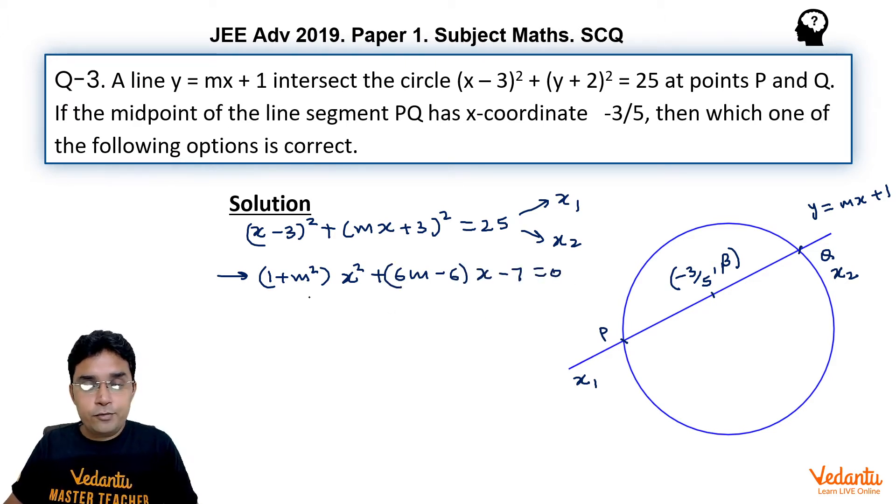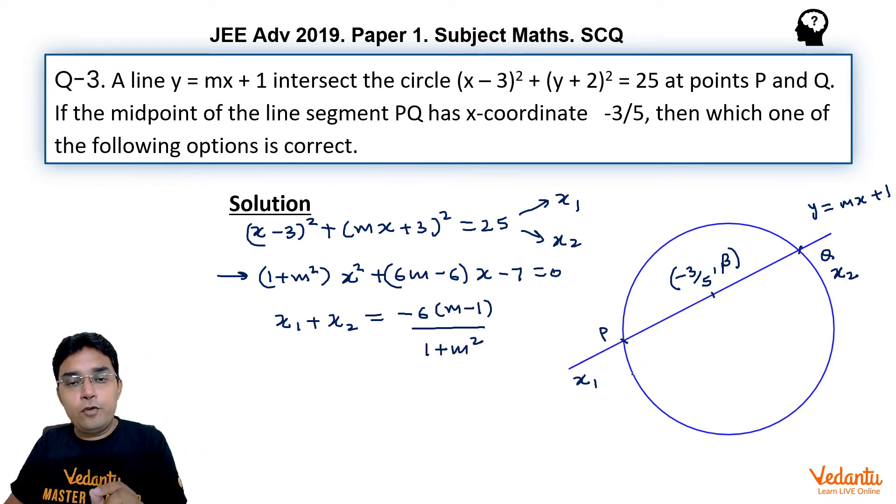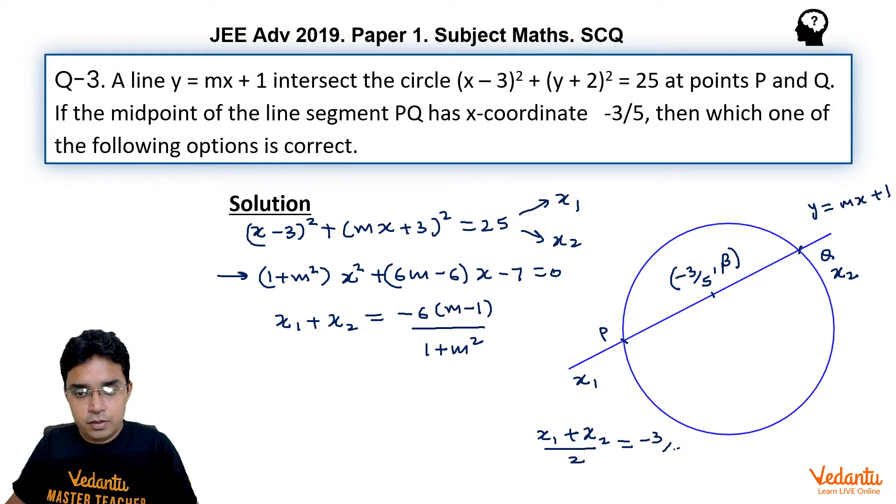Now sum of roots, we can take x1 plus x2, it would be minus of then 6 common (m minus 1) upon m square. Now this x1 plus x2 can also be obtained by using midpoint formula for x-coordinates of P, Q and their midpoint. So x1 plus x2 upon 2 should equal minus 3 upon 5. So I can write this x1 plus x2 as minus 6 upon 5.